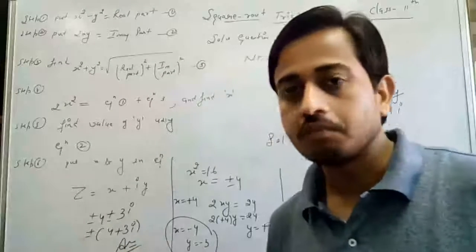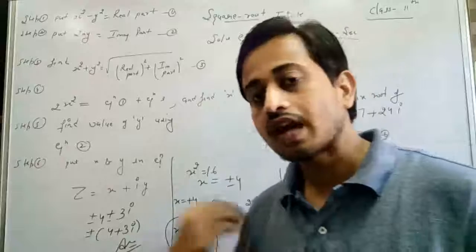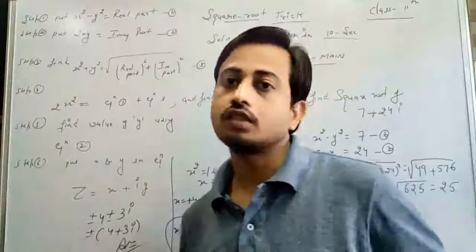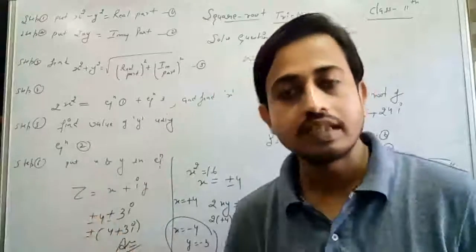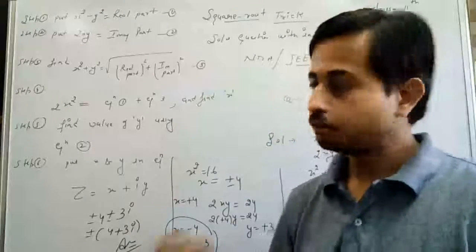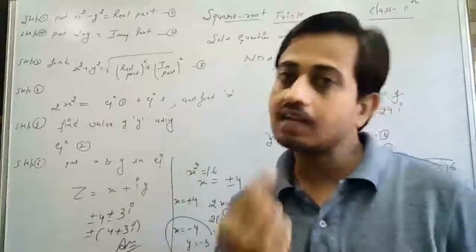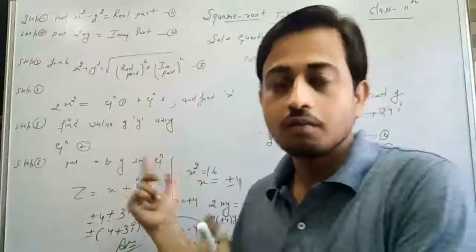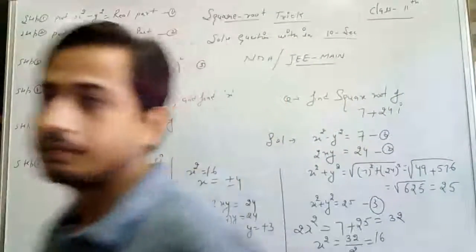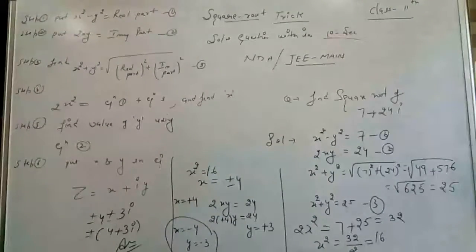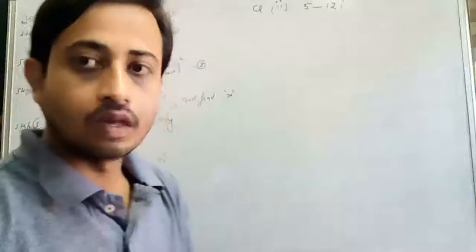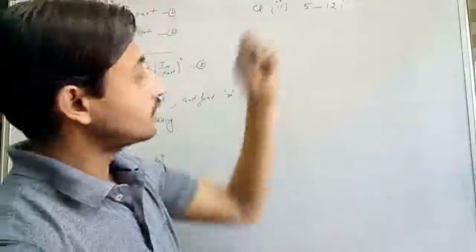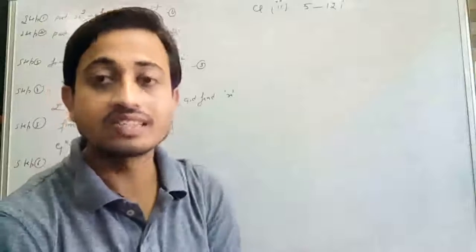Initially you will take some time, but with more practice you can solve this type of question very quickly within 10 seconds. Please keep all these points and try to learn them. Now let's solve a second example: find the square root of 5 minus 12 iota.